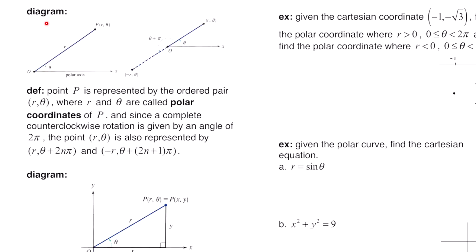First we're going to look at these diagrams. With polar coordinates and polar curves, this is called the polar axis. When you rotate your theta, if it's positive, you rotate up. If theta is negative, you rotate down. And then r is how far out you go. So this point right here we describe as r, theta. Here you have a polar coordinate r, theta — you rotate up theta, and then you go out a length of r.